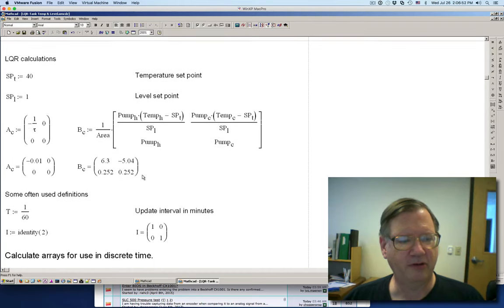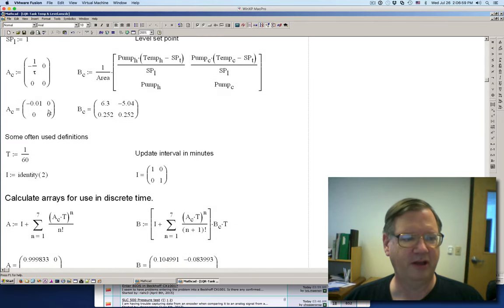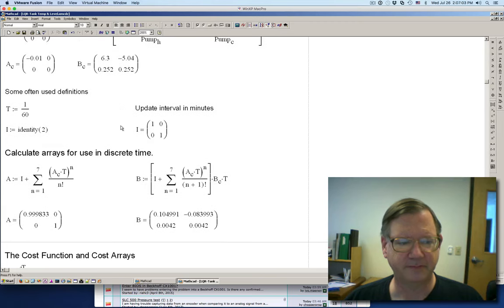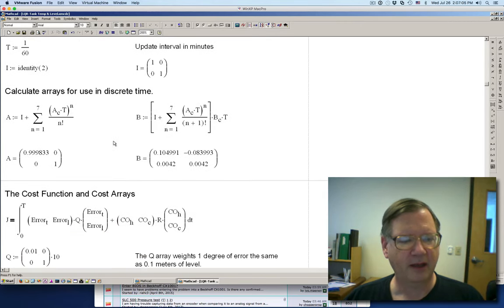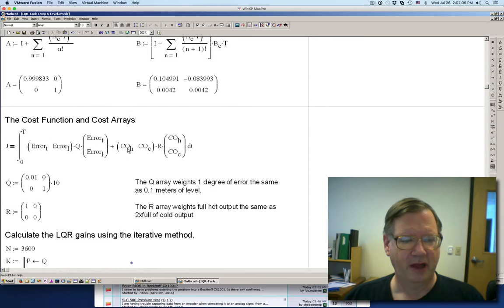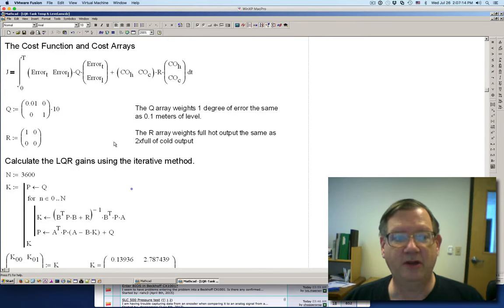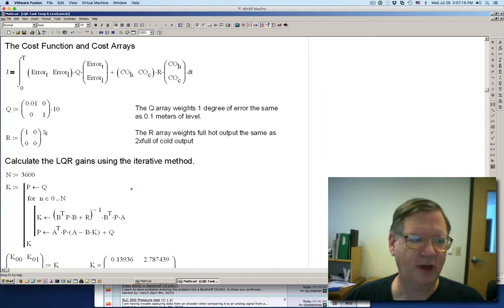Now I'm going to do the calculations to calculate out the, this is the continuous time domain or time arrays. This is the transition matrix. This is the input coupling matrix. Calculate out the digital versions, discrete versions. And then this is my cost function.